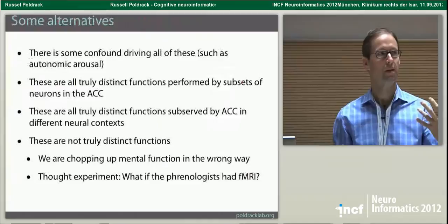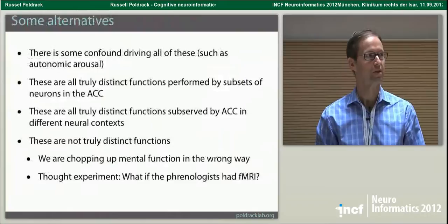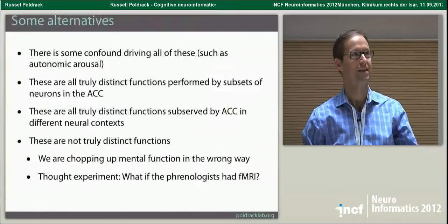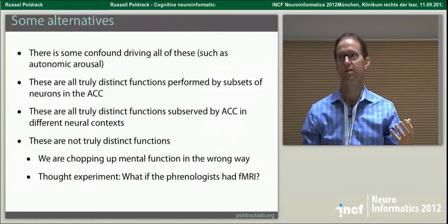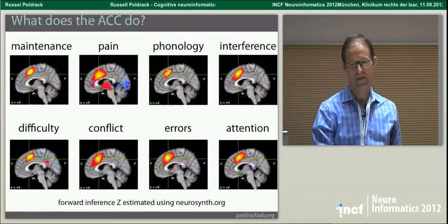How is it that we map mental function onto the brain? Usually we use an approach that Rick Henson first called forward inference, which is basically we try to wiggle something in the mind and see what in the brain wiggles when we do that. We manipulate some mental process like working memory maintenance — I tell you hold this phone number in your head — and we look at what brain areas turn up in activity, then infer that those brain areas must have something to do with whatever mental process I was wiggling.